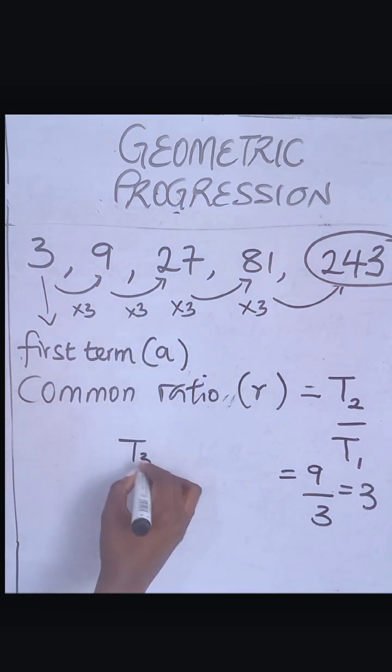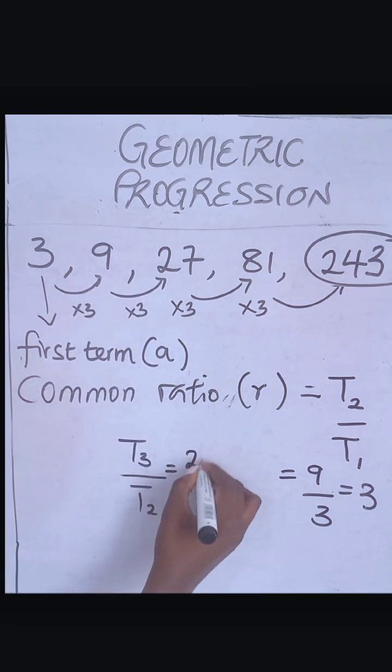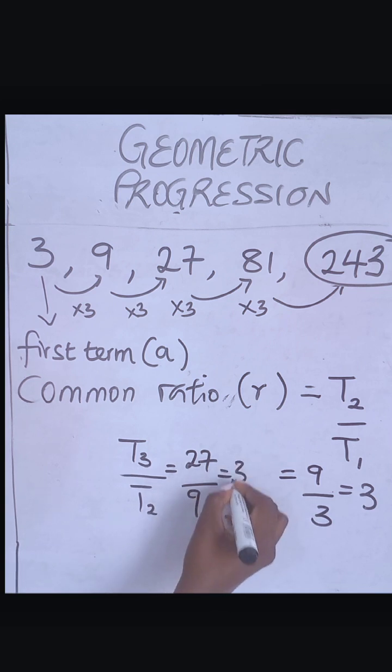You can also pick the third term which is T3 over T2. That's what? 27 divided by 9 will give you what? 3.